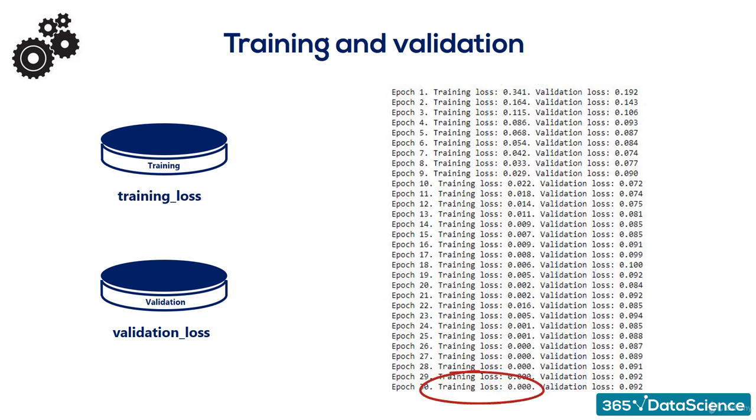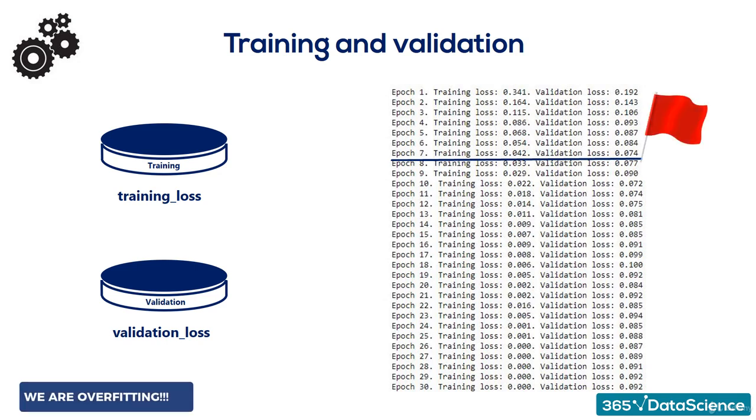That's where the validation loss comes in play. At some point, the validation loss could start increasing. That's a red flag. We are overfitting. We are getting better at predicting the training set, but we are moving away from the overall logic data. At this point, we should stop training the model.